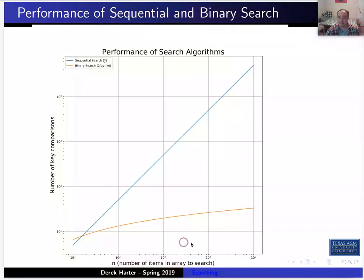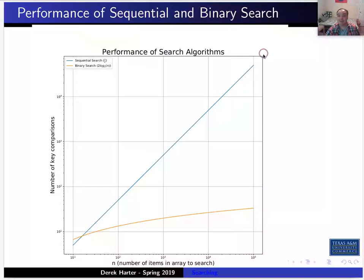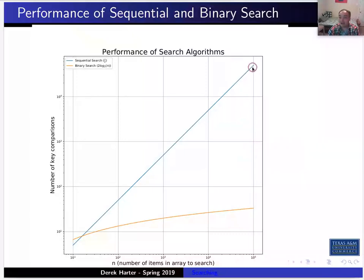Binary search is going to be almost immediate even for a billion items — it still only takes around 100 comparisons to search a billion items. But linear search would take half a billion comparisons, which might take hours depending on how fast your computer is. That's why being able to compare performance characteristics is important — it's impractical to search linearly through a billion items, but binary search returns almost immediately.